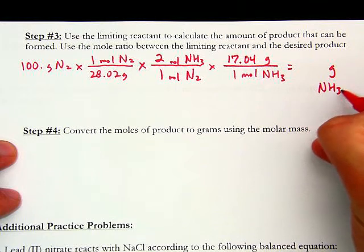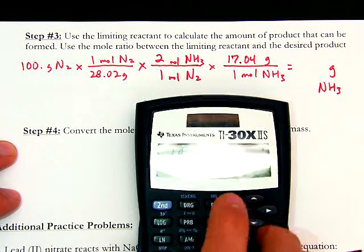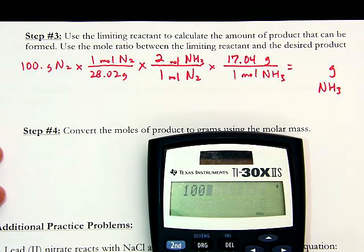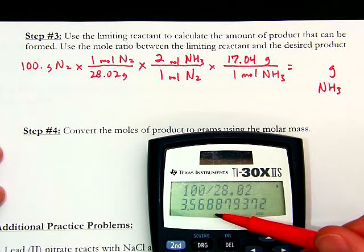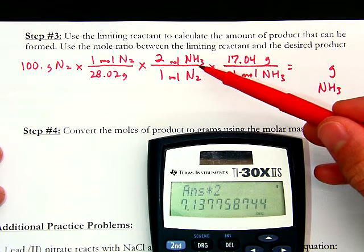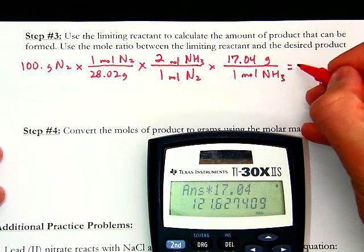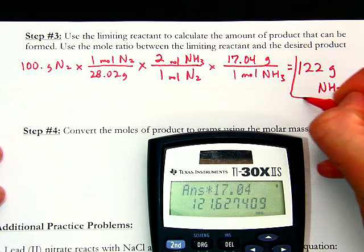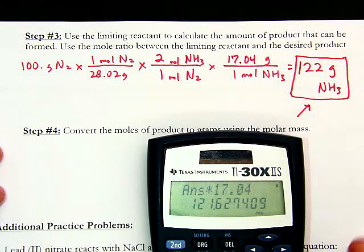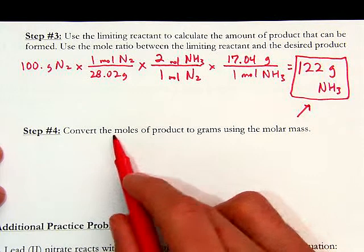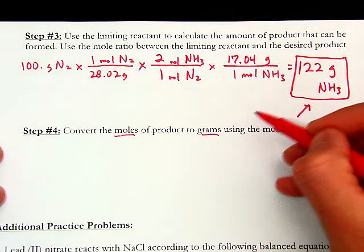Calculating: 100 divided by 28.02, times two, times 17.04 gives approximately 122 grams of NH₃. That's the maximum amount of grams that can be produced by the reaction of 100 grams of nitrogen and 30 grams of hydrogen. We converted from grams of nitrogen to moles of nitrogen, then moles of nitrogen to moles of NH₃, then moles of NH₃ to grams using the molar mass.